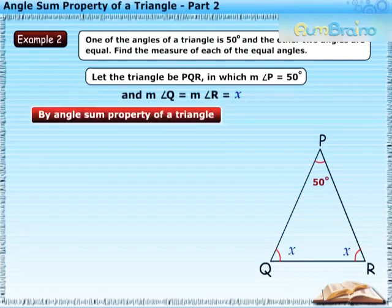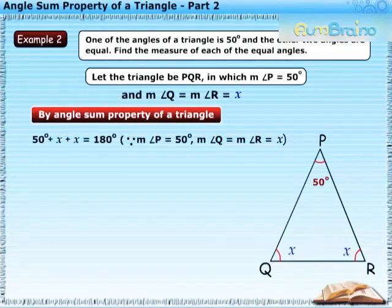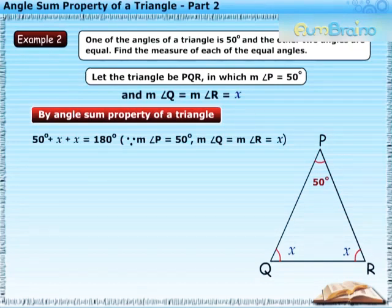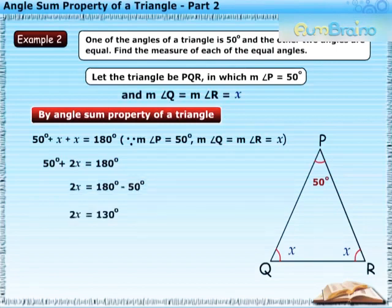Then, by angle sum property of a triangle, 50 degrees plus X plus X is equal to 180 degrees. Or, 2X is equal to 130 degrees.